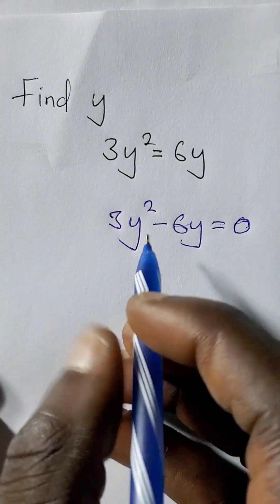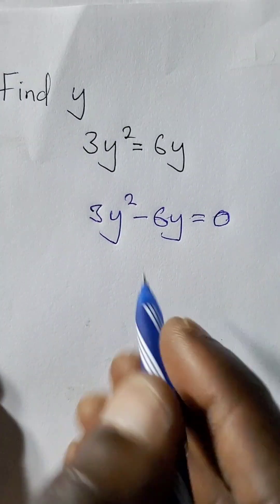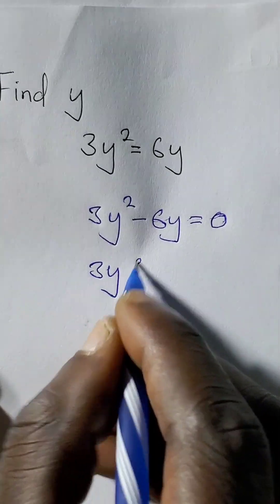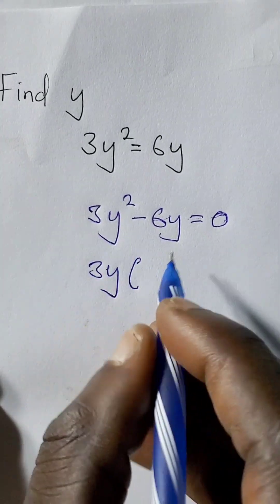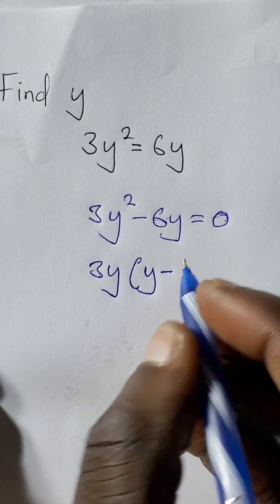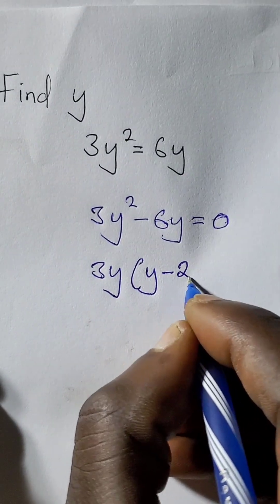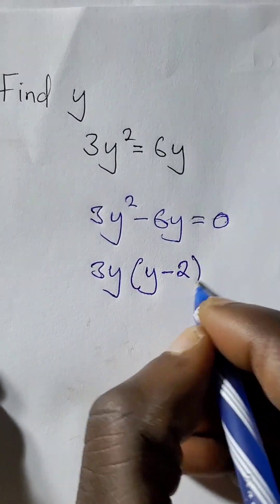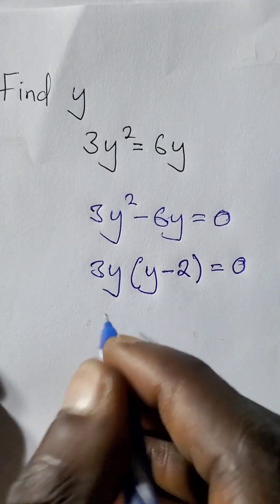So then you factorize here. 3y is common, open bracket. 3y into 3y squared just remain with y, minus 3 into 6y, just remain with 2. The y's cancel, is equal to 0.